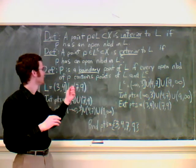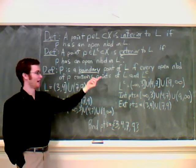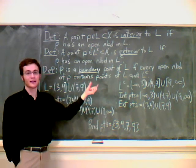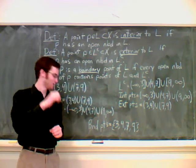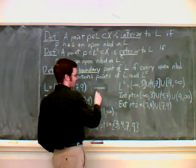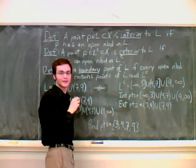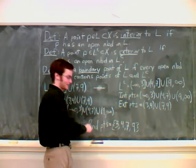A point P in L complement is exterior to L if P has an open neighborhood in L complement. P is a boundary point of L if every open neighborhood of P contains points of L and L complement.